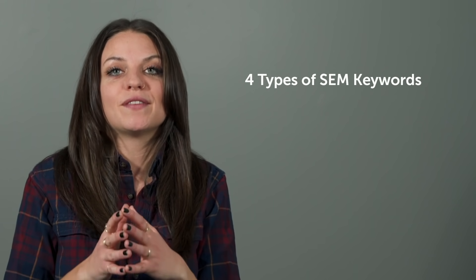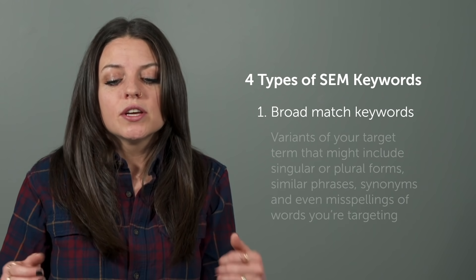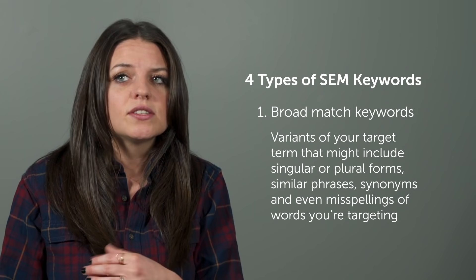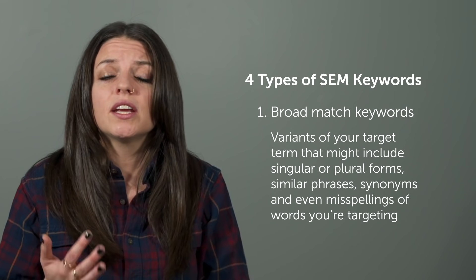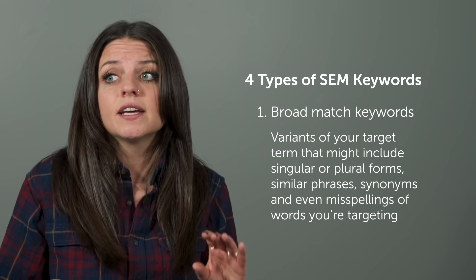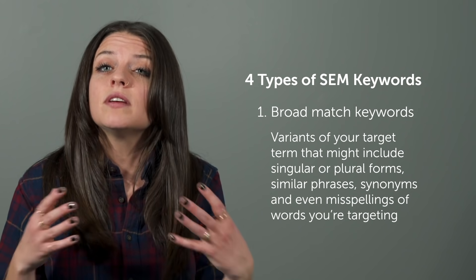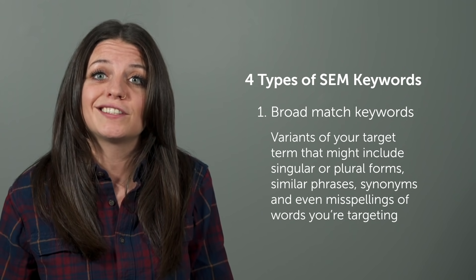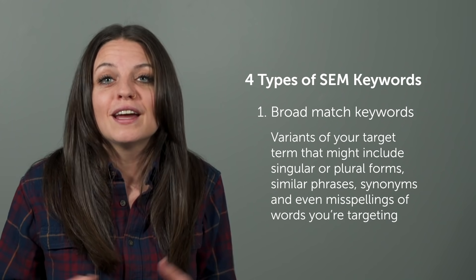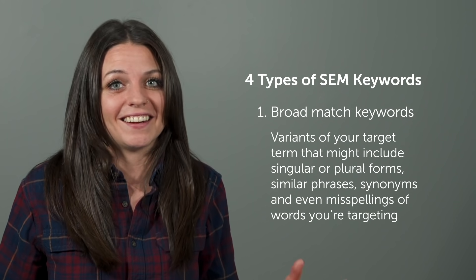There are four main types of SEM keywords. First up are broad match keywords. These are variants of the key phrases or words you're targeting — think singular or plural forms, synonyms of your target keywords, similar phrases, or even misspellings. Going back to our lizard clothing example, you might want to bid on 'lizards' with an S to broaden your reach.